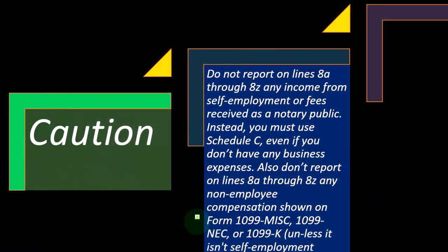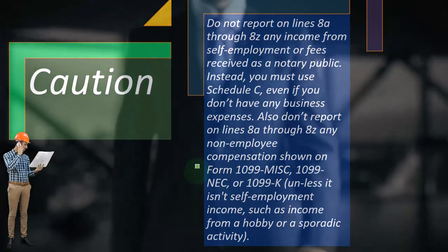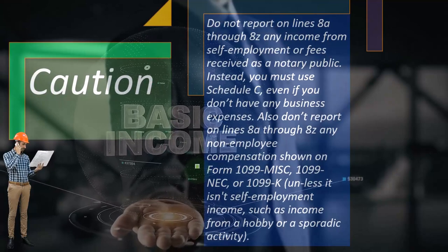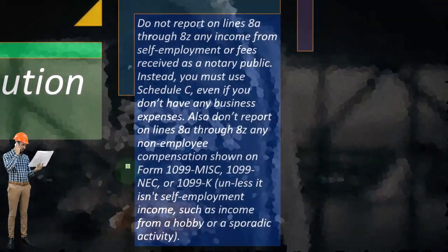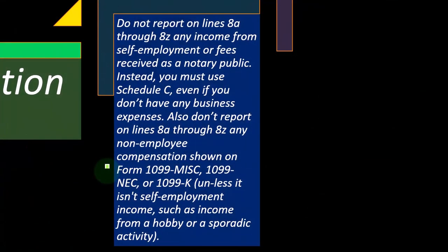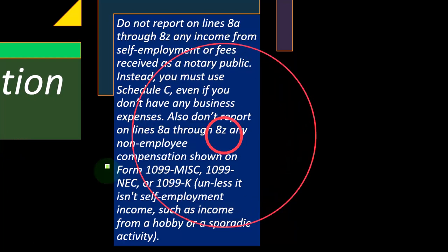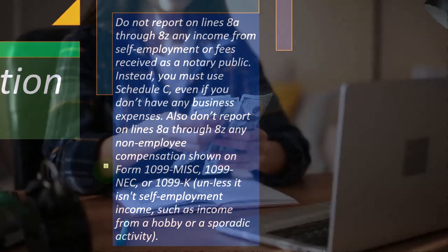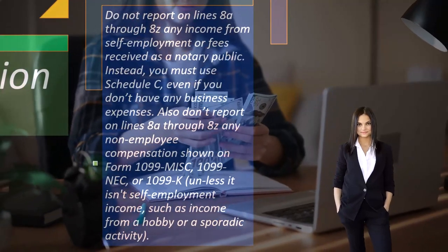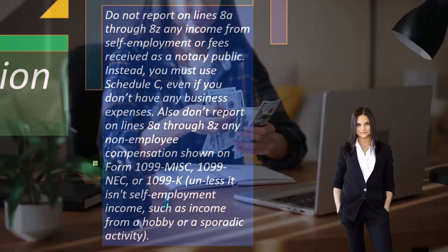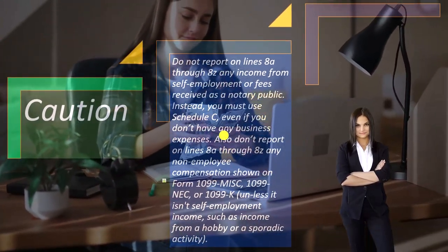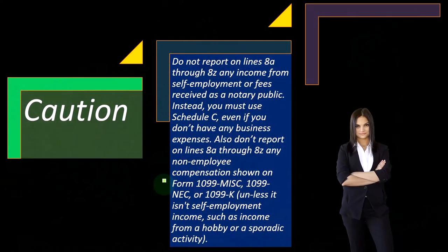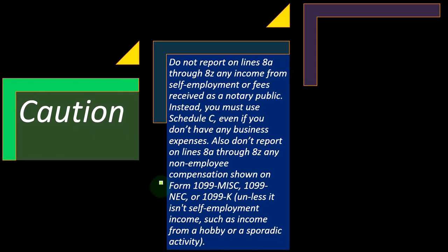You can get into classification questions: should it be hobby income or self-employment? If you get a 1099 Miscellaneous, NEC, or K, the IRS would generally assume it's self-employment income and expect to see a Schedule C unless you claim it's a hobby. The IRS allows the hobby classification because they don't want people taking losses — if you had more expenses than income on Schedule C, you could write that loss off against W-2 wages, which the IRS doesn't want to see. So just keep that general rule in mind.